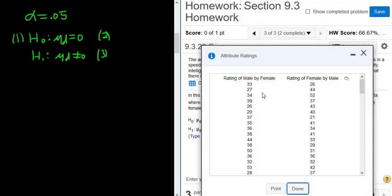So what is μd? Let me explain it one more time. So if you do 33 minus 26, you get 7. If you do 27 minus 44, you get another number. These numbers that you get when you subtract, they're called the d's. The d's are a sample, because this is a sample, so therefore the numbers that you get when you subtract are also a sample.